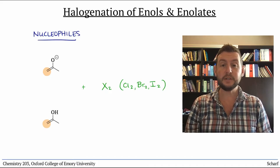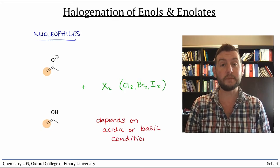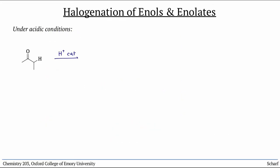The outcomes of these reactions depend on whether they are conducted under acidic or basic conditions. Under acidic conditions, carbonyl compounds are in equilibrium with their enol tautomers. The acid-catalyzed mechanism of enolization looks like this.